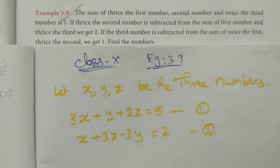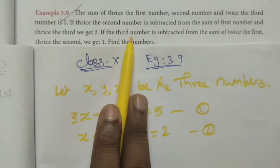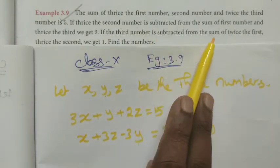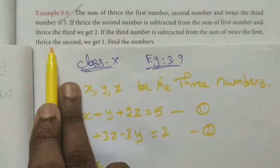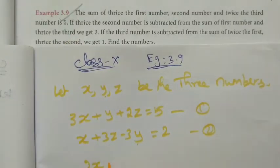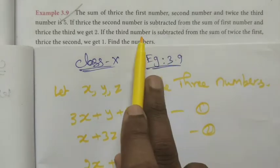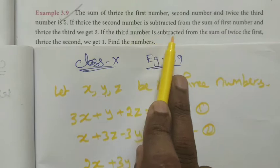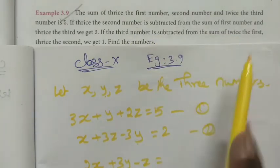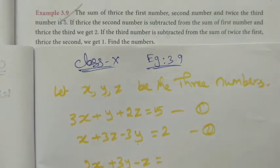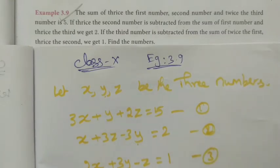Third condition: if the third number is subtracted from the sum of twice the first number and thrice the second number, we get a value equal to 1. So the third equation is 2x plus 3y minus z equals 1. We now have 3 equations and need to find the numbers.